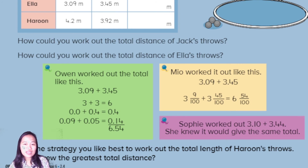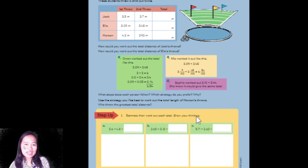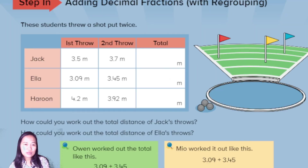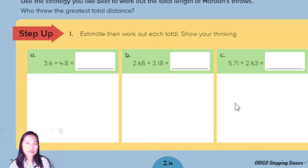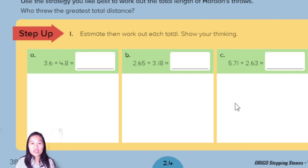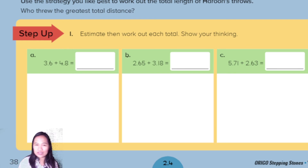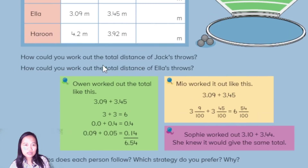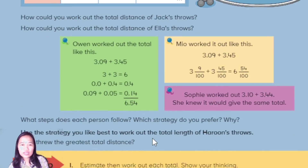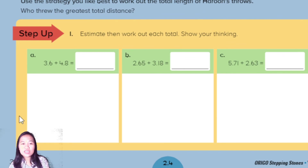Now look at your work. For Number 1 — estimate first, then work out each total. Look at the numbers and estimate what the answer might be, keep it in mind. After that, use any method you like to show your working.